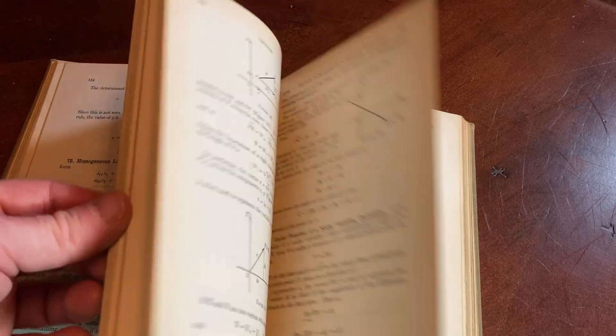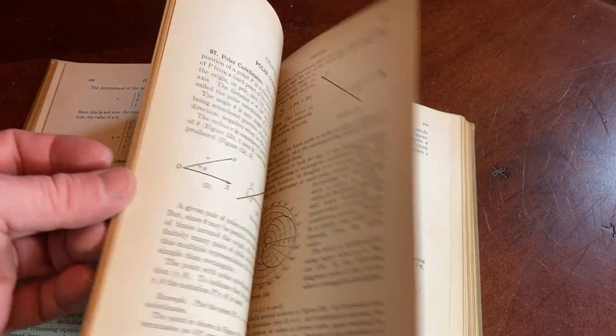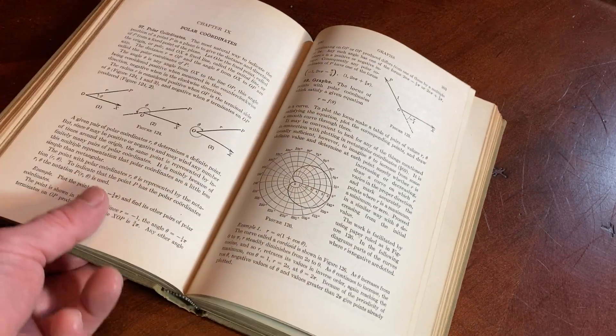It was written by a man named H.B. Phillips. He was a professor at MIT and then he became the chair of the math department at MIT.